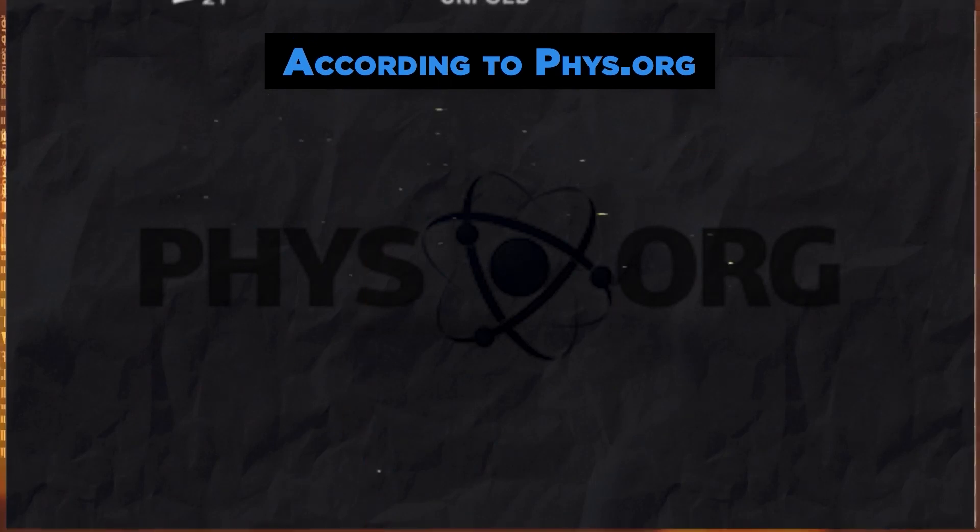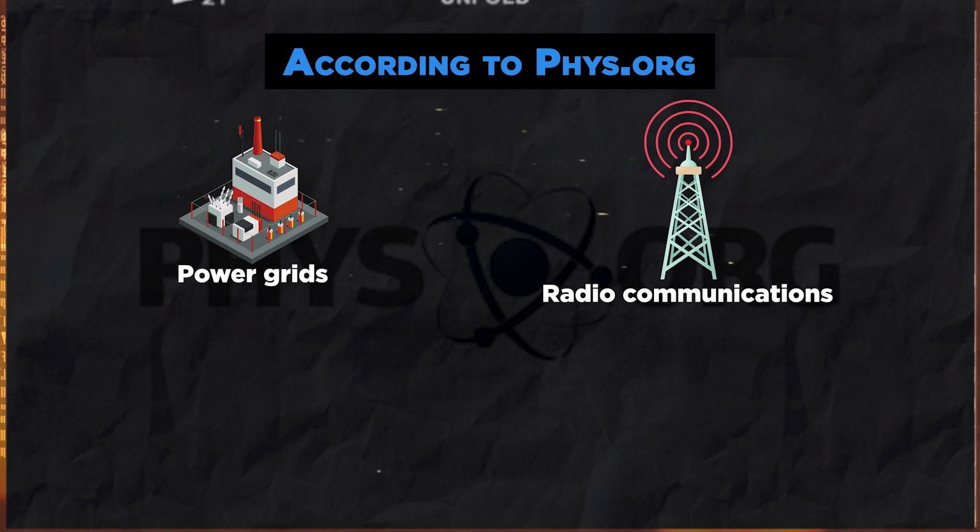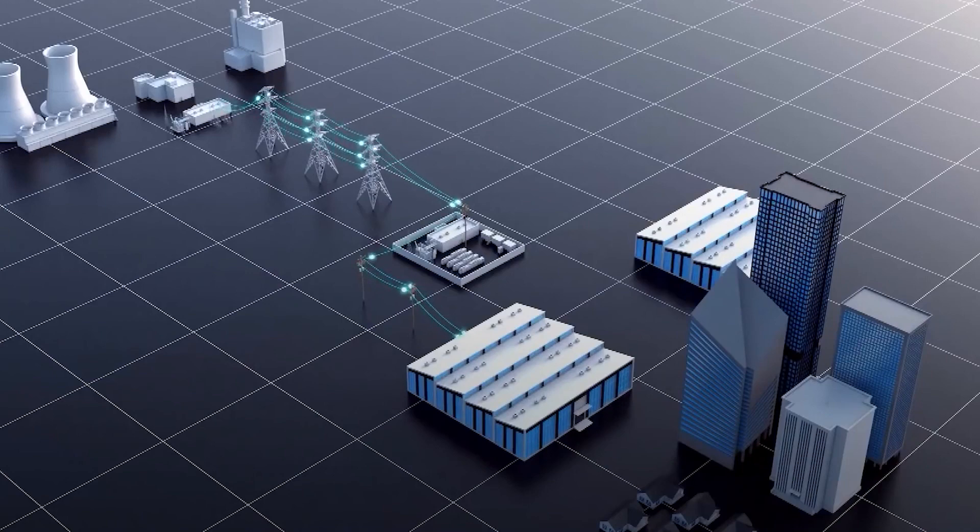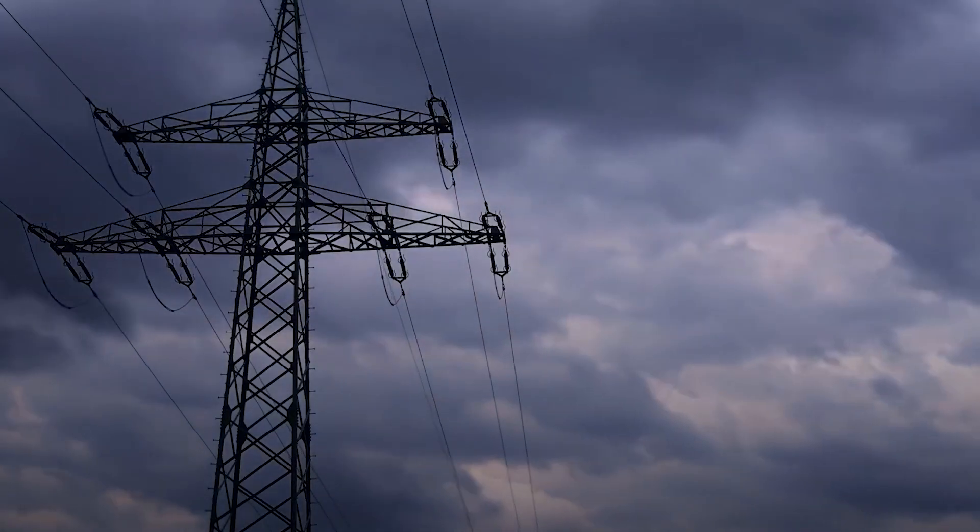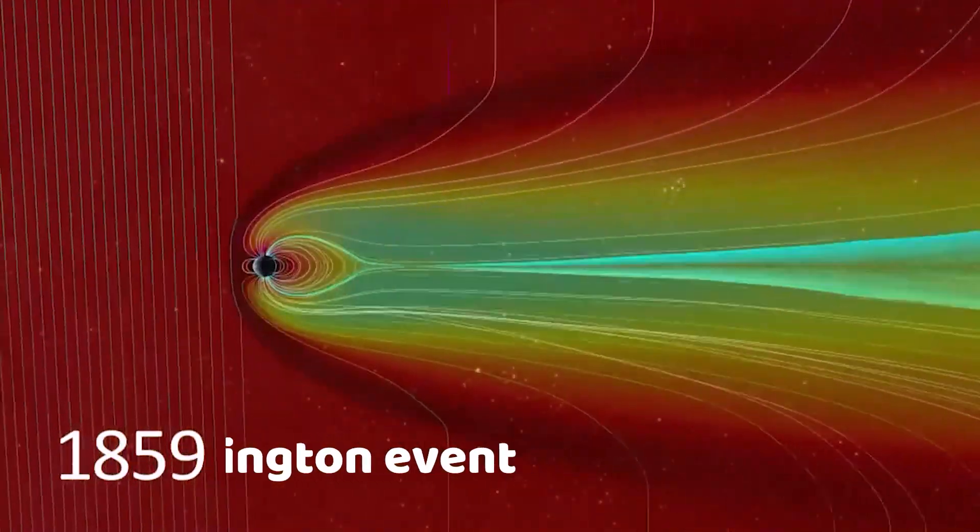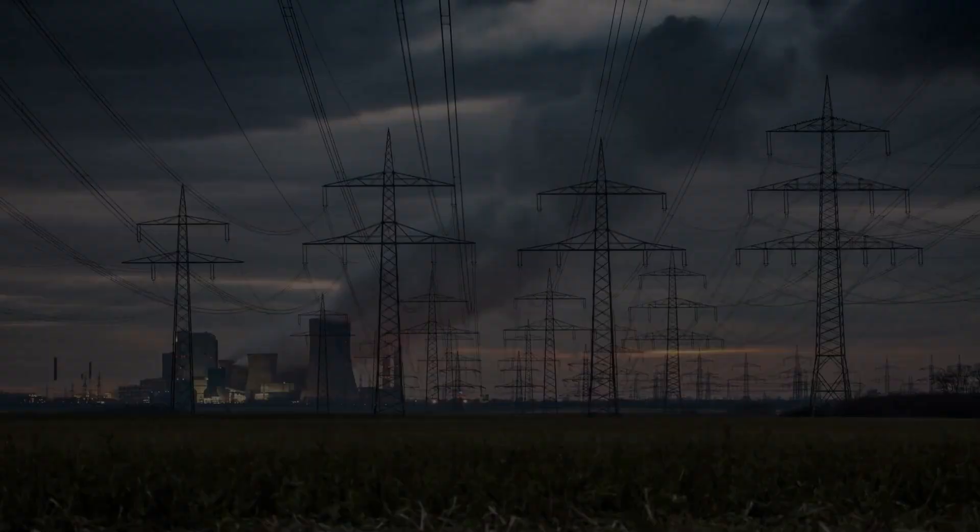When a CME interacts with our atmosphere, it instigates temporary disturbances in our planet's magnetic fields known as geomagnetic storms. According to physics.org, such storms can adversely affect power grids, radio communications, satellite systems, and other terrestrial electromagnetic systems.